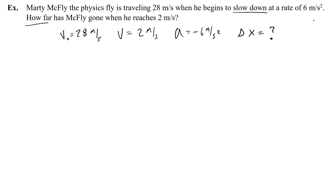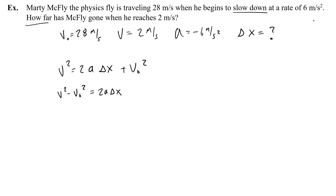Now I look at these four values and instead of thinking I don't have an equation with those four things in it — I do. I have the ain't got no time equation. So I write it down and solve for delta x by subtracting v-naught squared from both sides, then dividing both sides by 2a. That gives delta x equals v squared minus v-naught squared over 2a.